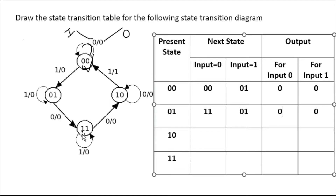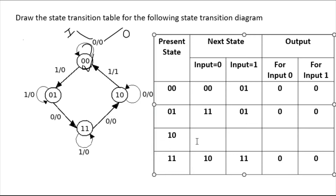Now come to the one-one state. One-one has no transition when input is one, so it stays at one-one, and the output is zero. Now one-one is going to one-zero state when input is zero, and output is also zero. So here one-zero is your next state and output is zero.